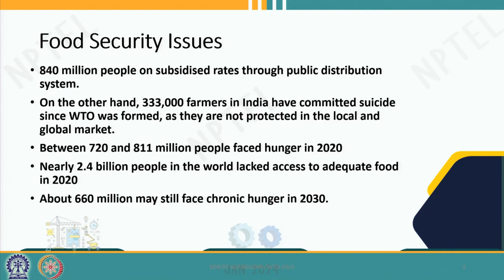If we look into the total scenario, the Food and Agriculture Organization says that 840 million people are getting food through subsidized rates through the public distribution system. This is the lifeline of the poor people in India who are getting food items through the public distribution system. On the other hand, around 3,33,000 farmers have committed suicide in India.